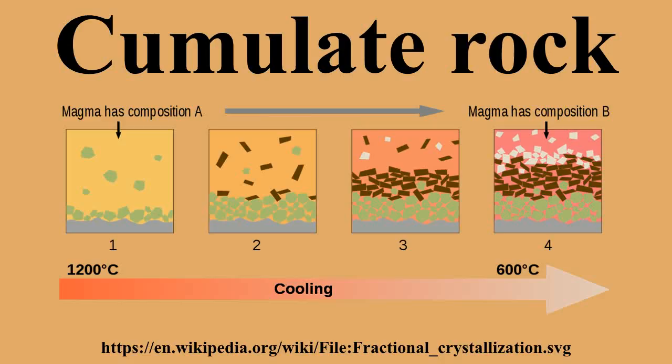Cumulate rocks are typically named according to the cumulate minerals in order of abundance, then cumulate type, then accessory or minor phases. For example, a layer with 50% plagioclase, 40% pyroxene, 5% olivine, and 5% groundmass would be termed a plagioclase-pyroxene adcumulate with accessory olivine. A rock consisting of 80% olivine, 5% magnetite, and 15% groundmass is an olivine mesocumulate.